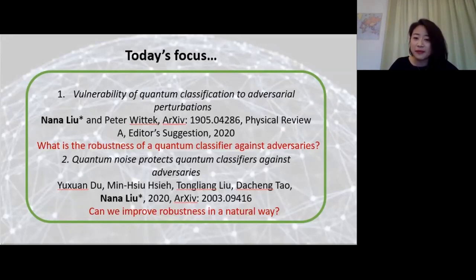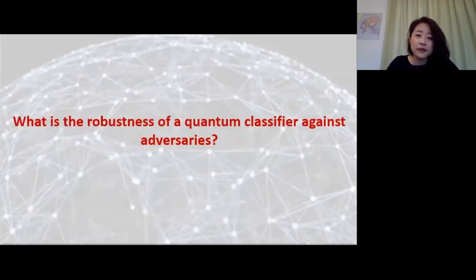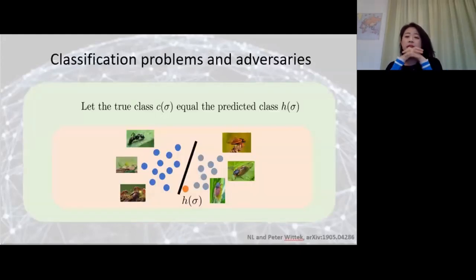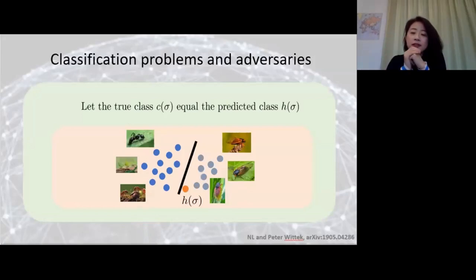So now we're up to the second part of the talk, where we address two questions: what is the robustness of a quantum classifier against adversaries to Bob's test examples, and can we improve this robustness in a natural way? So for the first part, what is the general robustness of quantum classifiers against adversaries? Let me motivate this pictorially. We saw the example of distinguishing between ants and cicadas with some dividing line, and we have a new testing example slightly to the right of this line.